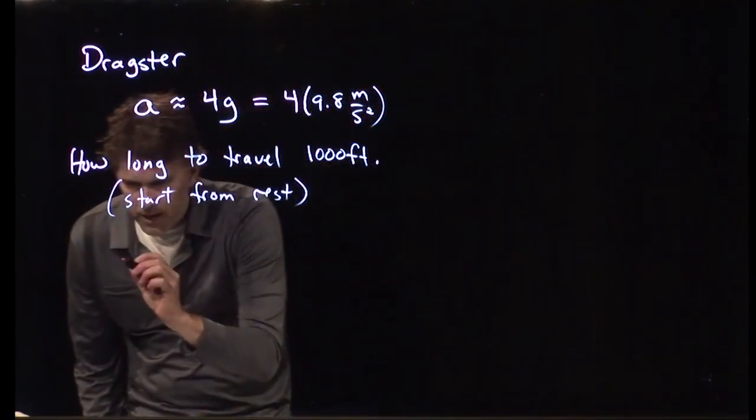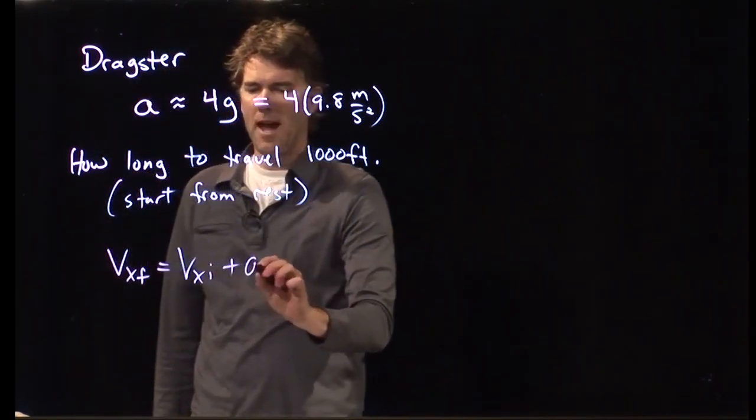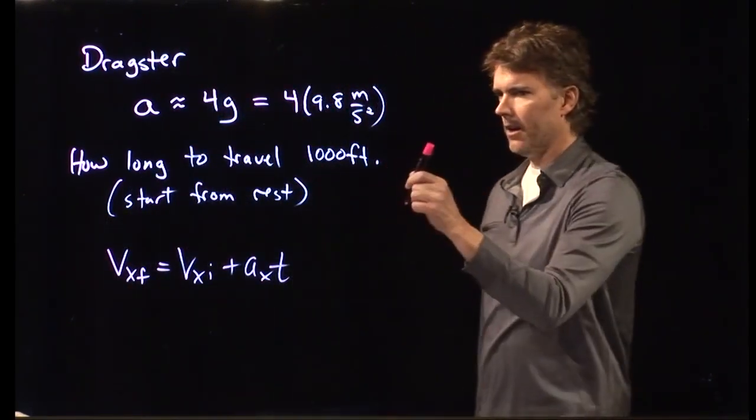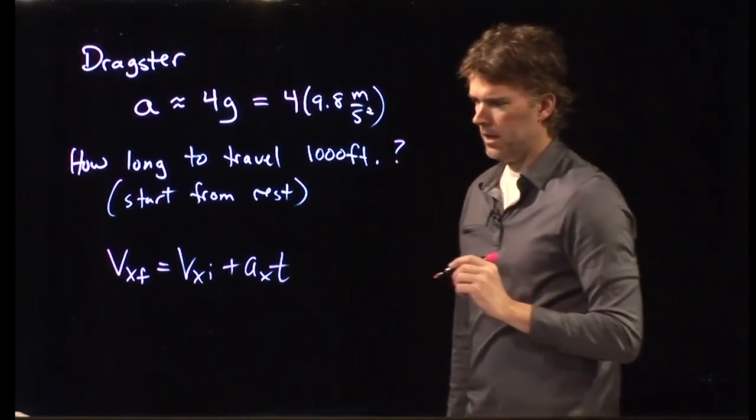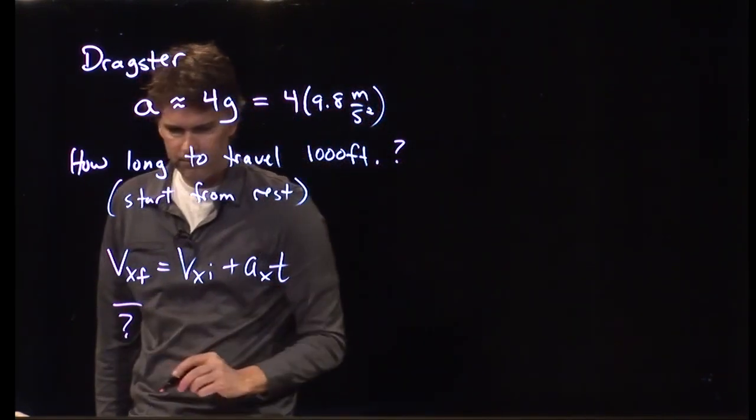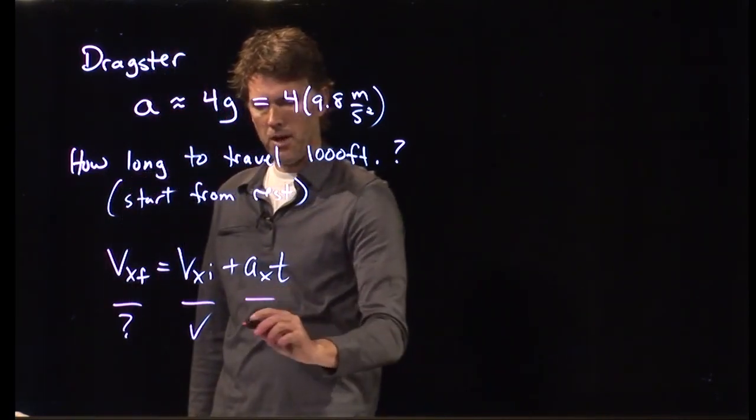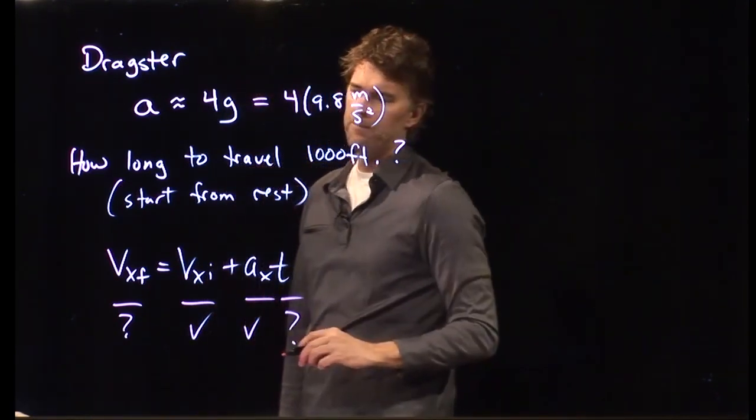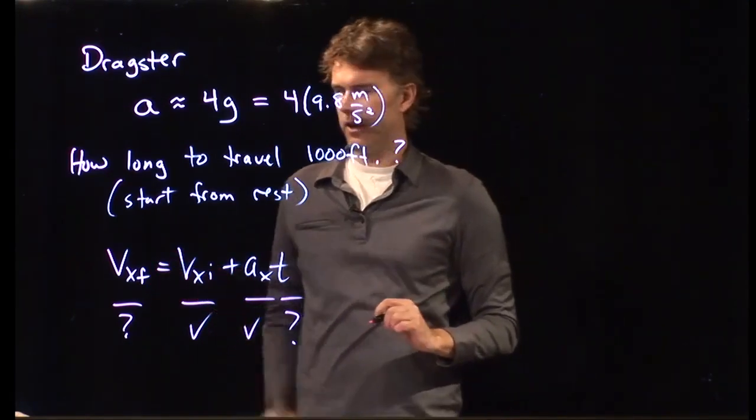So, we're going to go to our kinematic equations. One of them, we said, was this. Vx final equals vx initial plus a sub x times t. Is that going to help us get to the time? No, not yet, because we don't know that. This, we know it starts from rest, that's zero. This, we know it's 4 G. But that guy, we don't know either. So, we only have one equation, and we have two unknowns. And that's not going to help us do it.